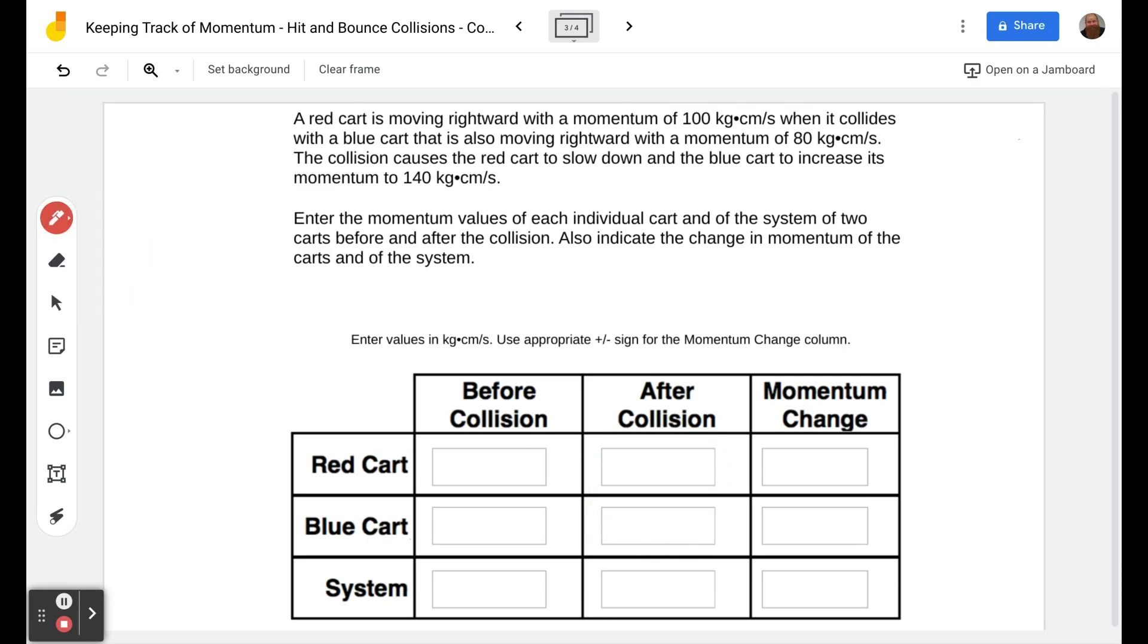Let's go through the statement and fill out our chart. A red cart is moving rightward, so that's positive, with a momentum of 100 kilogram-centimeters per second. So red cart before collision is 100. When it collides with the blue cart that is also moving rightward, so positive, with a momentum of 80 kilogram-centimeters per second. Since we have both momentums before collision, the system is just the total of those.